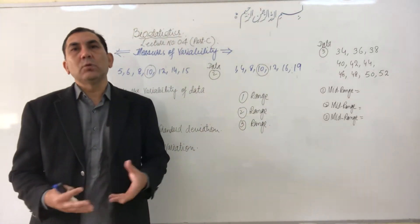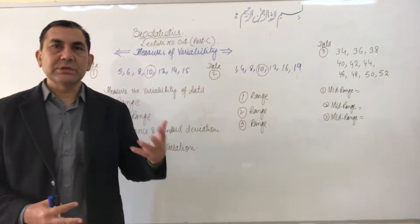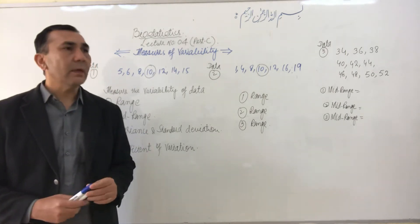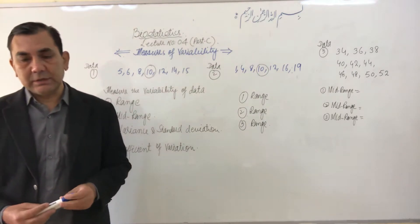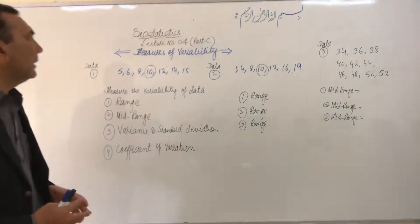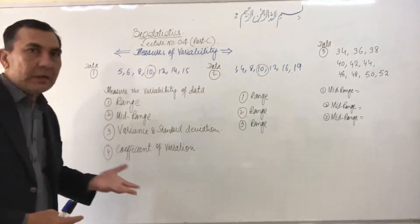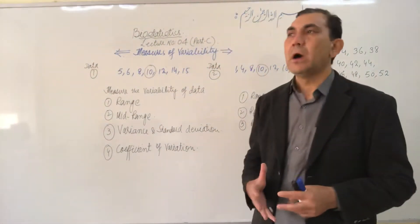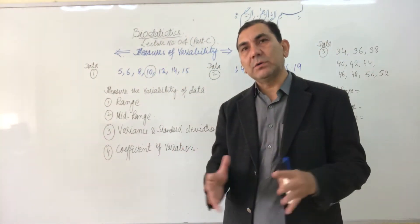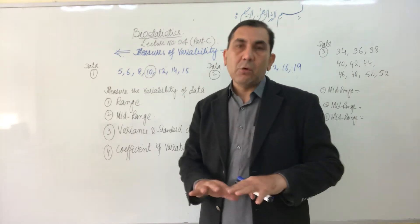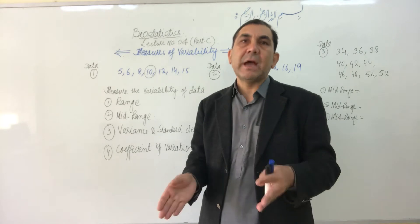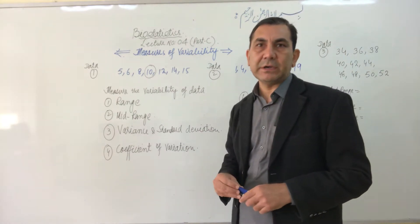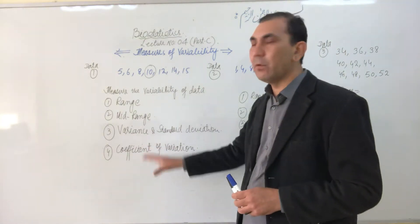Assalamu alaikum and welcome once again to the lecture series on biostatistics. Today is lecture number four, part C. In today's lecture we will learn about the measures of variability — how the data are spread, and how much variability is present inside a data set. For measuring variability of a data set we have four methods.